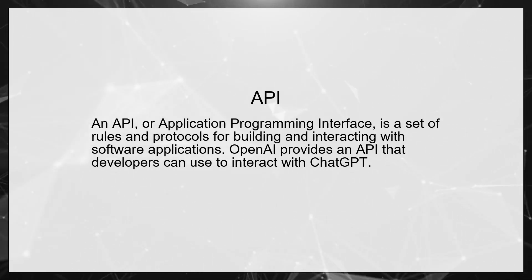API. An API, or Application Programming Interface, is a set of rules and protocols for building and interacting with software applications. OpenAI provides an API that developers can use to interact with ChatGPT.